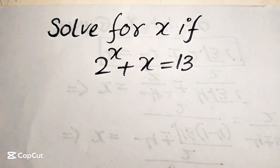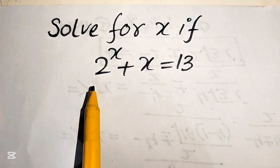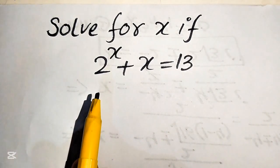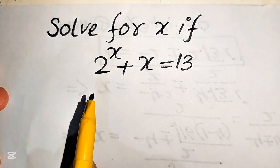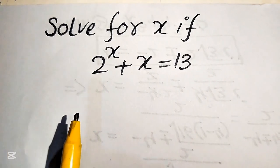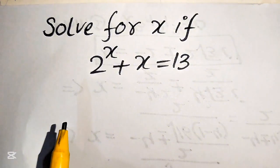Hello everyone, today I want to show you how to solve this problem for the values of x. We have 2 to the power of x plus x equals 13, and we solve this problem for the values of x. I hope you like this method, but if you have any other method in mind, please don't hesitate to write it into the comment section.